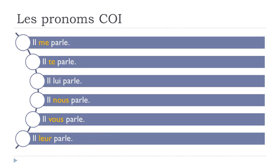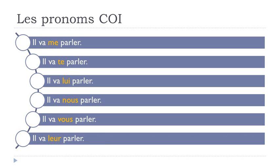These examples were with one verb. Now the same sentences at the near future with two verbs — we can see how the pronouns go. He's going to talk to me — il va me parler. He's going to talk to you — il va te parler. He's going to talk to him or her — il va lui parler. He's going to talk to us — il va nous parler. He's going to talk to you — il va vous parler. He's going to talk to them — il va leur parler.